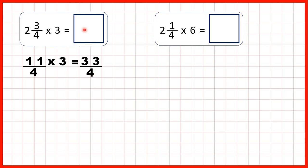We can turn that back into a mixed number by dividing. 33 divided by 4 is 8 remainder 1, and the denominator stays the same. So our answer is 8 and 1 quarter. We can check: 8 times 4 is 32, plus 1 is 33.